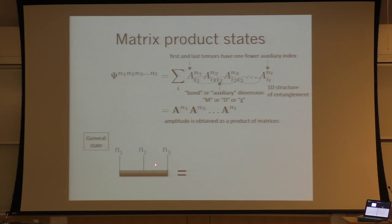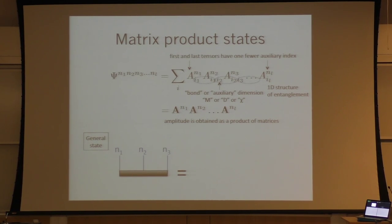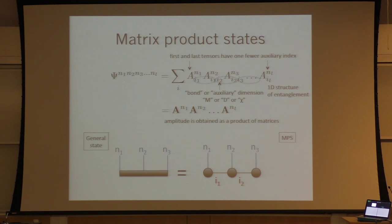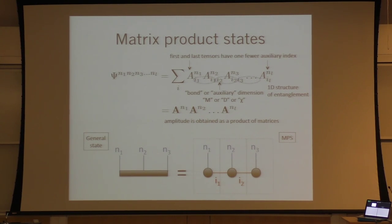So this is a general state rewritten as a matrix product state — an equivalence, no approximation. Here's the first tensor, second tensor, third tensor. The A on site one is not assumed to be the same as the A on site two — each site can have a different matrix. The notation uses A for all of them to avoid writing A1, A2, etc., but in the picture it's obvious they're different objects.